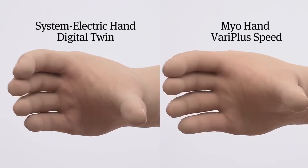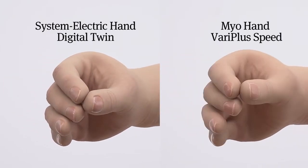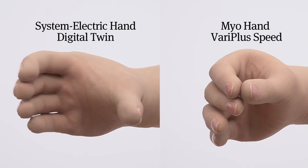The VariPlus Speed hand opens and closes more than twice as fast as other electric hands.